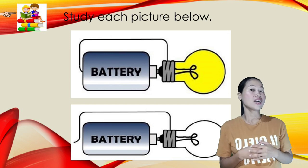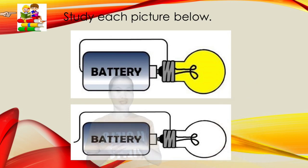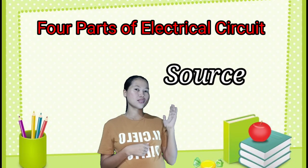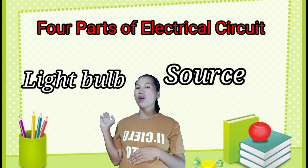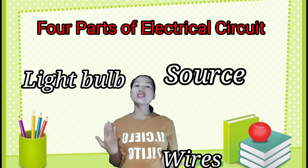An electrical circuit has four parts: a source, light bulb, wires, and switch.